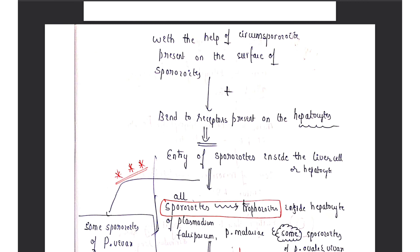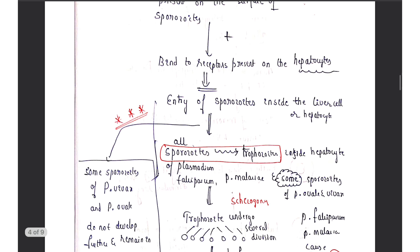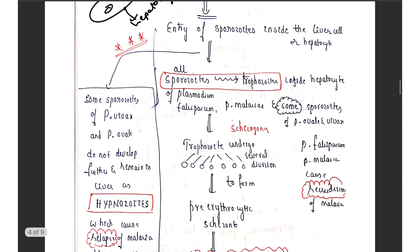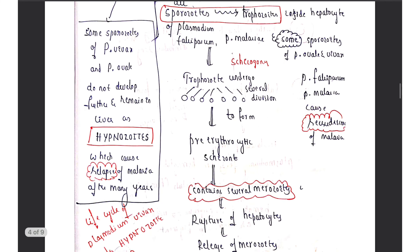With the help of circumsporozoite proteins present on the surface of the sporozoites, they bind on the receptors of the hepatocytes. Once they bind, the sporozoites are taken inside the liver cells. Once inside the hepatocyte, sporozoites are converted into trophozoites — the next developmental form. The trophozoite then undergoes several divisions to form merozoites. This structure is called the pre-erythrocytic schizont.